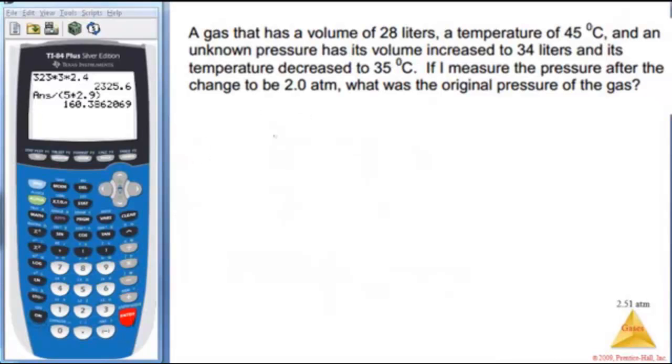All right, a gas has a volume of 28 liters. So I have volume, pressure, temperature. It starts with 28 liters. Temperature 45, so it's 45 plus 273, that's 318 K. It has its volume increased to 34 liters. The pressure initially I don't know, unknown pressure. I'm trying to find initial pressure. If I measure the pressure after the change and it's 2.0 atm, and the temperature goes down to 35°C, so that would be 308 K.